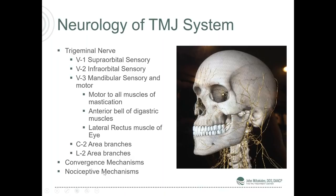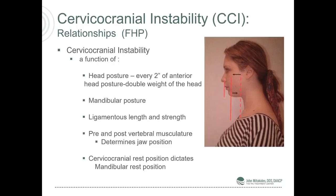Let's talk about cervical cranial instability. It has to do with the posture of the head and the support of the cervical spine. As a basic rule of thumb, your ear, shoulder, and hips should all be on the same line. For every two inches the head goes forward, it actually doubles the weight of the head, putting strain on the ligaments, tendons, and muscles of the neck and upper back. The position of the jaw is dictated by the position of the head and the upper cervical spine. The pre- and post-vertebral musculature determines the jaw position — where the neck is determines where the jaw is. It is all related.